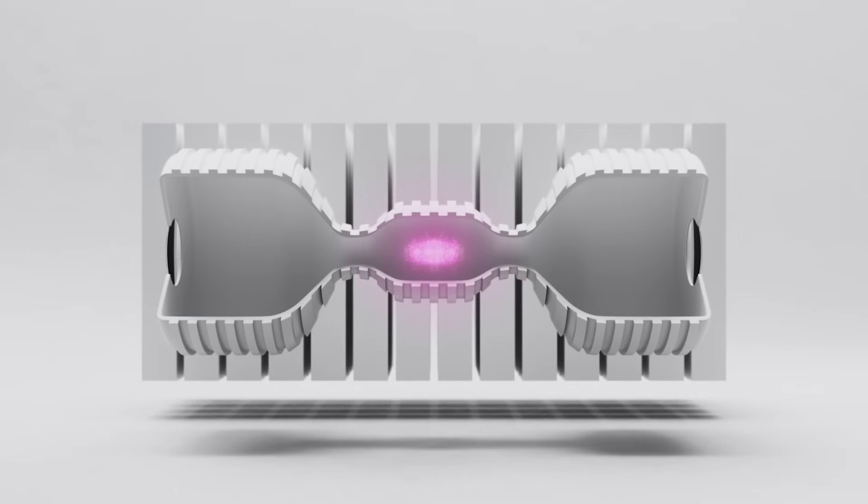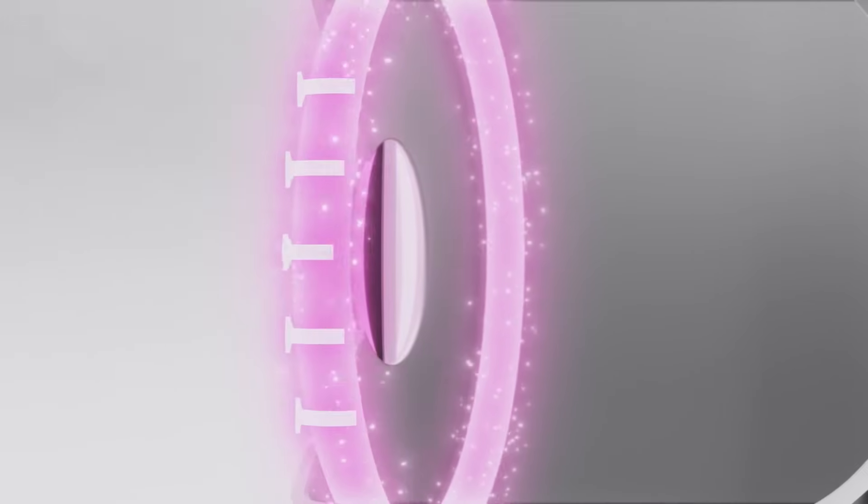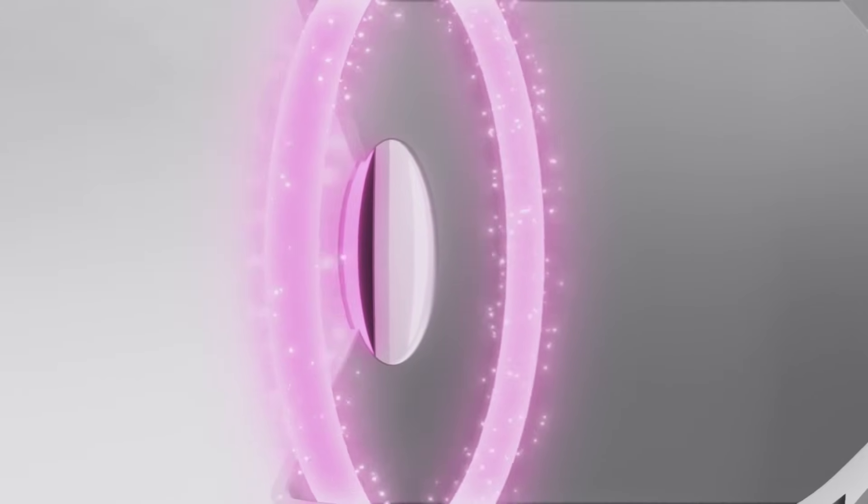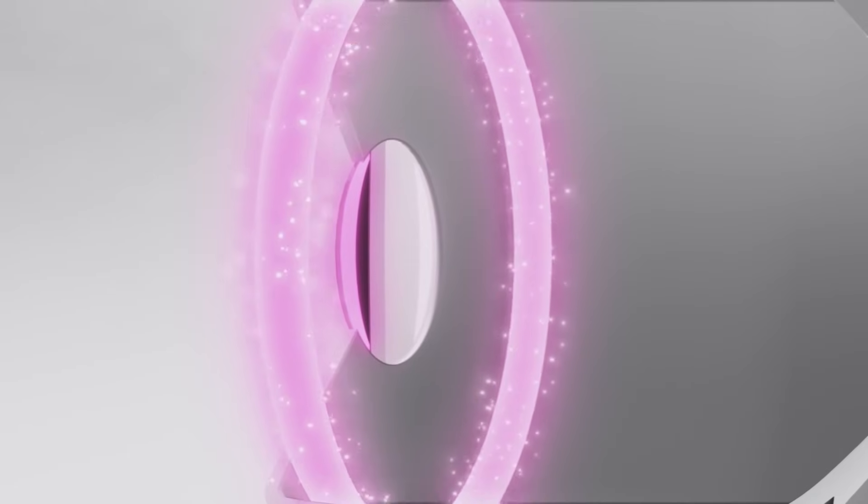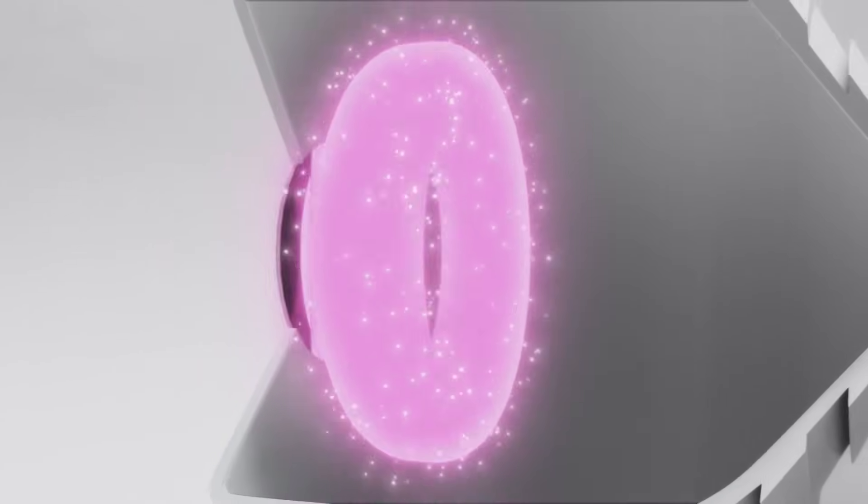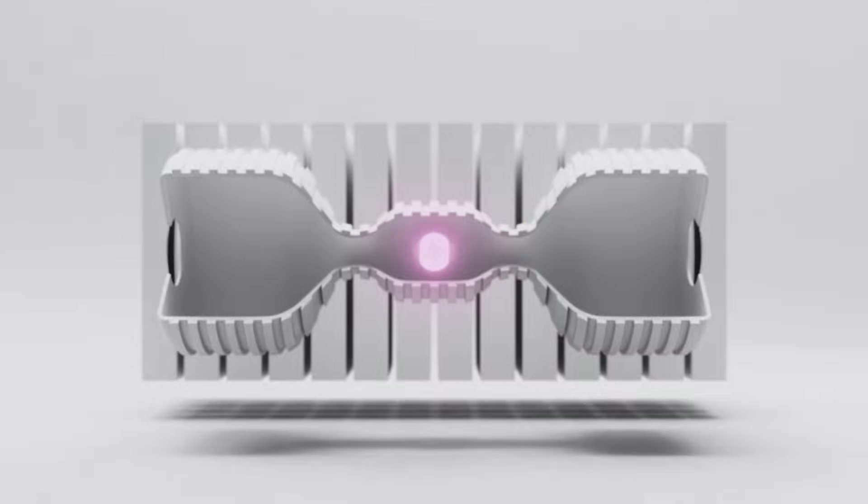On the opposite side of the reactor, the exact same thing is happening, and the two rings collide in the center. Magnetic fields squish this hot plasma into a hotter, denser plasma that reaches the densities and temperatures needed for fusion.